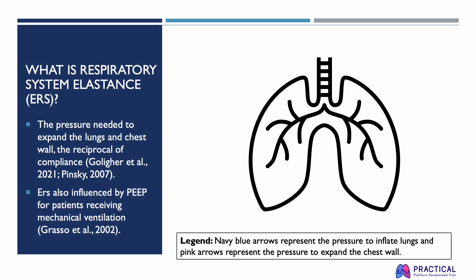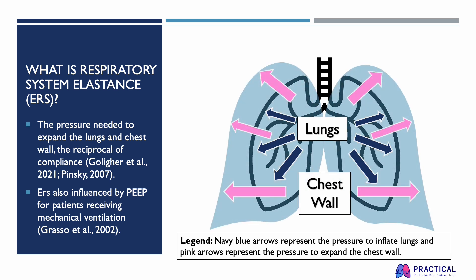Respiratory system elastance, also abbreviated as ERS, is the pressure needed to inflate the lungs and expand the chest wall — the reciprocal of compliance. ERS is determined by the volume of the lung and the number of lung units available for ventilation. When lung volume is approximately normal, elastance is low. When there is significant collapse or consolidation of the lung, ERS is increased substantially. Because PEEP can modify lung volume and stretch, ERS is also influenced by the set PEEP.